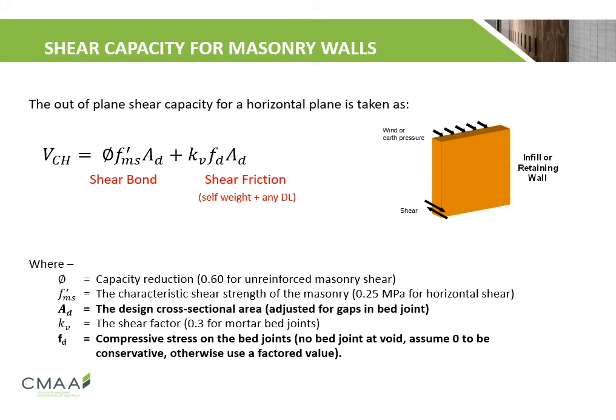The shear capacity for masonry walls is calculated by combining shear bond and shear friction, which includes self-weight and any dead load. The factors affecting the out-of-plane shear capacity for a horizontal plane include: phi, the capacity reduction factor, taken as 0.6 for unreinforced masonry shear; fms, the characteristic shear strength of the masonry, taken as 0.25 MPa for horizontal shear; Ad, the design cross-sectional area, adjusted for gaps in the bed joint; Kv, the shear factor, taken as 0.3 for mortar bed joints; and fd, the compressive stress on the bed joints, assumed to be 0 to be conservative, as there are no bed joints at the void.